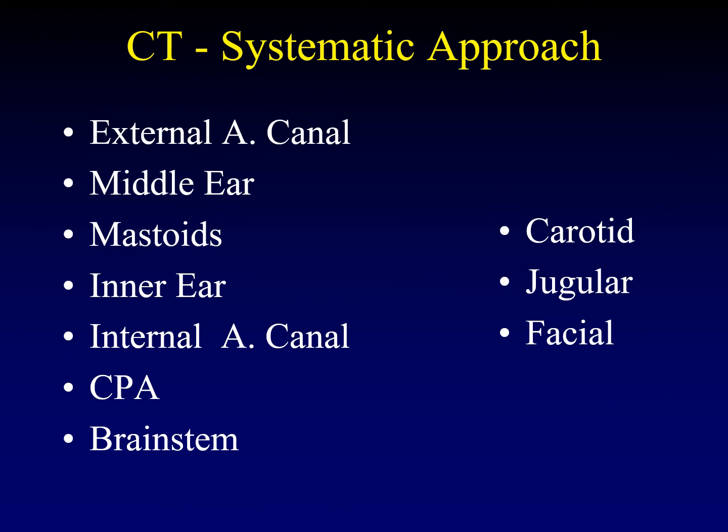In closing, take a systematic approach when you evaluate CT of the temporal bone. You can use any pattern you like; I happen to like outside-in: external canal, middle ear, mastoids, inner ear, internal auditory canal, cerebellopontine angle, brain stem. Don't forget to also look at special anatomic structures: the carotid artery, the jugular bulb, and the facial nerve. This ends the lecture on temporal bone anatomy — you're all set for the series of lectures on temporal bone pathology.